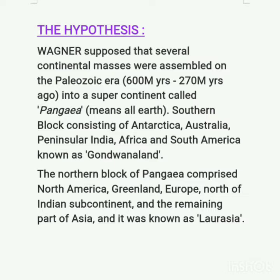About 250 million years ago, this whole Pangaea started to drift — it divided into two blocks. The southern block, consisting of Antarctica, Australia, Peninsular India, Africa, and South America, was known as Gondwana land. The other block, Laurasia, consisted of North America, Greenland, Europe, north of the Indian subcontinent, and the remaining part of Asia. The continental blocks, made up of Sial — silicon and aluminium — used to drift over the relatively denser Sima material.